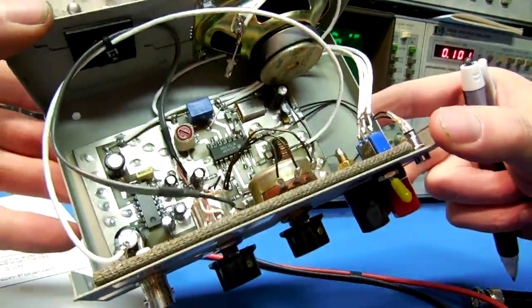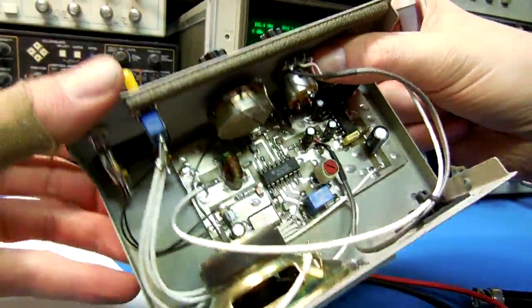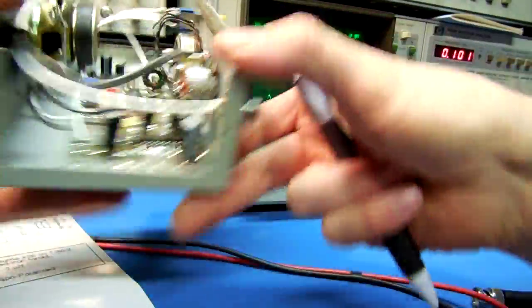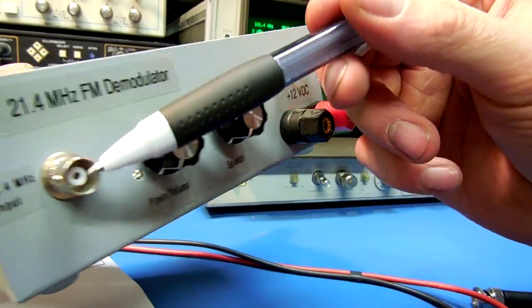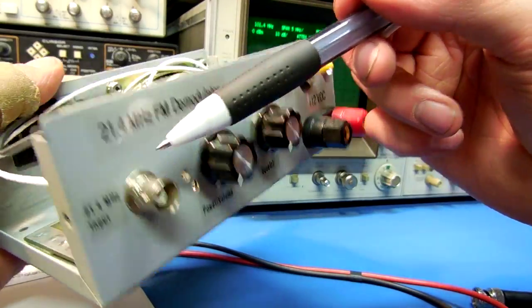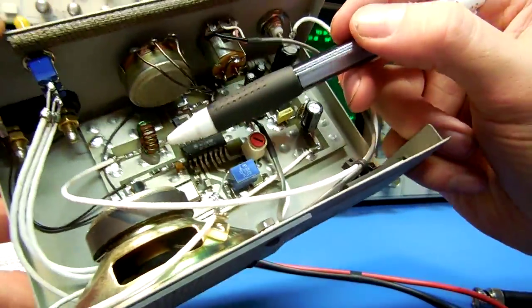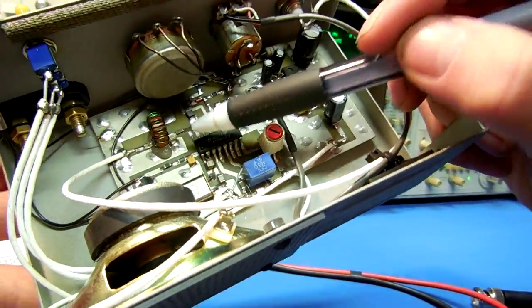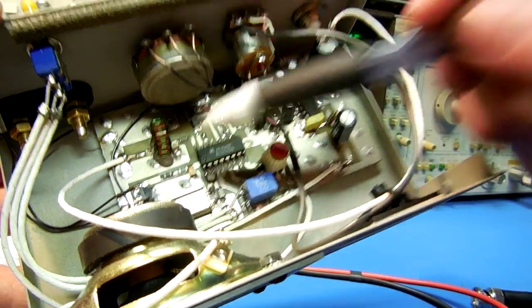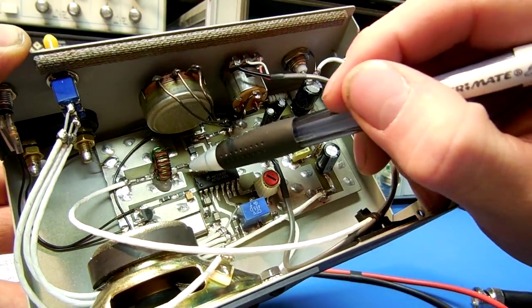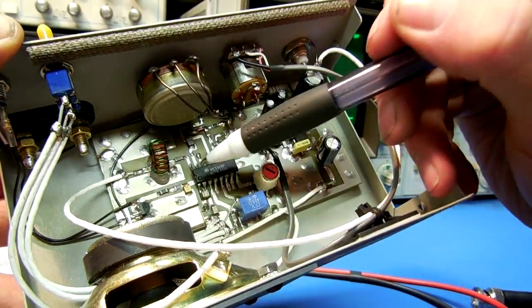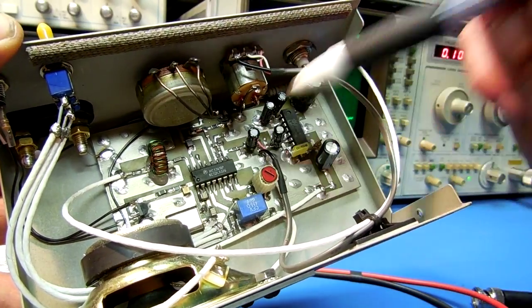Here's the actual circuit itself. BNC input for the 21.4 megahertz IF input. Here's our 3 micro henry inductor, 18 picofarad capacitor, a series 0.01 into pin 16 of the 3361.